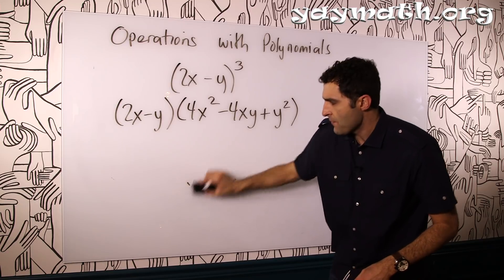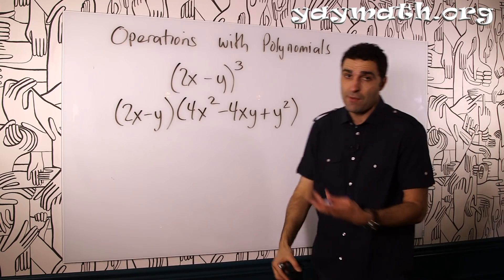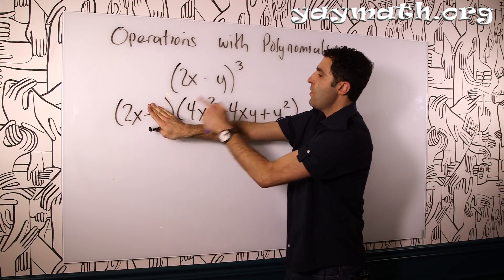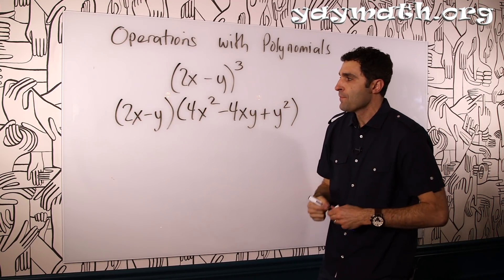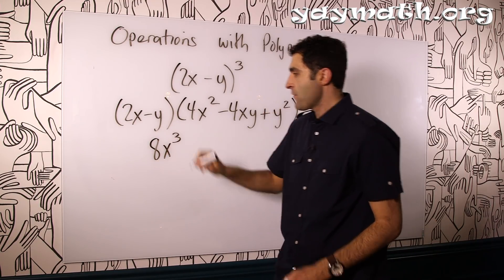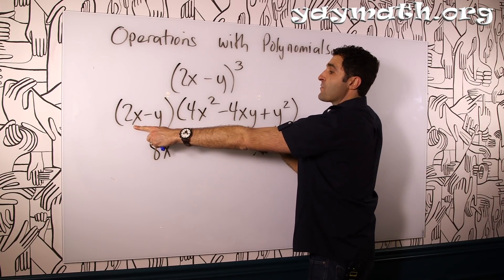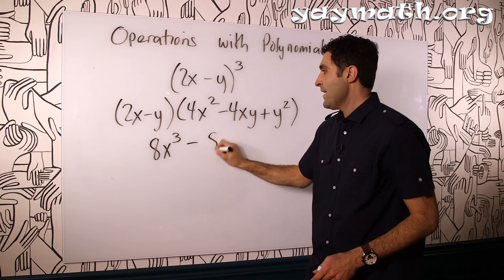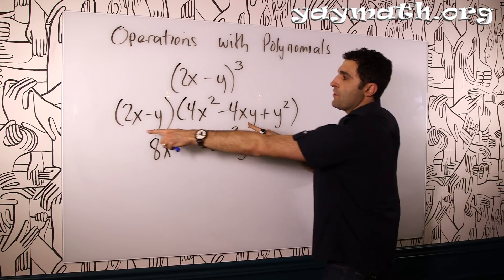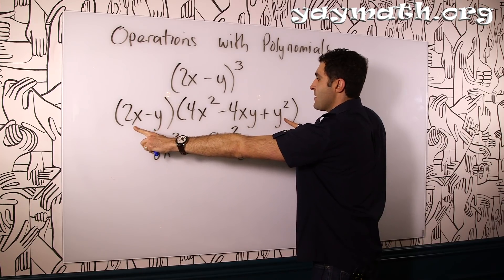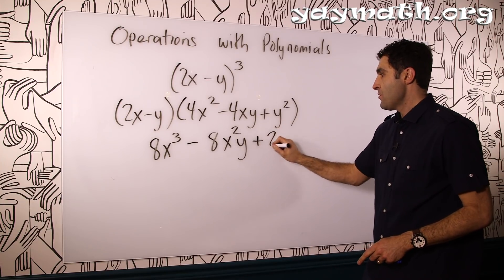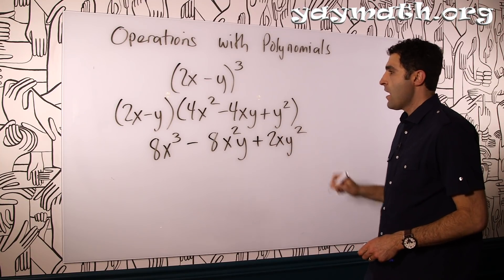You'll notice I'm trying to write it really big for myself as well, or just use whiteboards. Here we go. Distributive property, 2x times 1, 2, 3. I'm going to do it. 2x times 4x squared is 8x to the power of 3 cubed. 2x times negative 4xy is negative 8x squared. That's these two. And then you have 2x times y squared is plus 2xy squared. Half done.